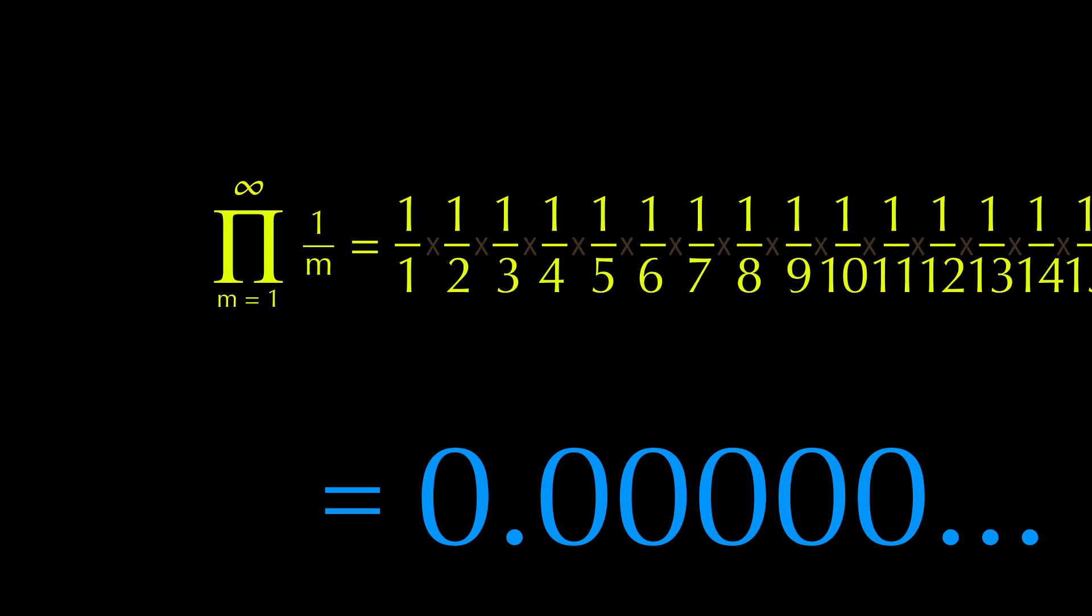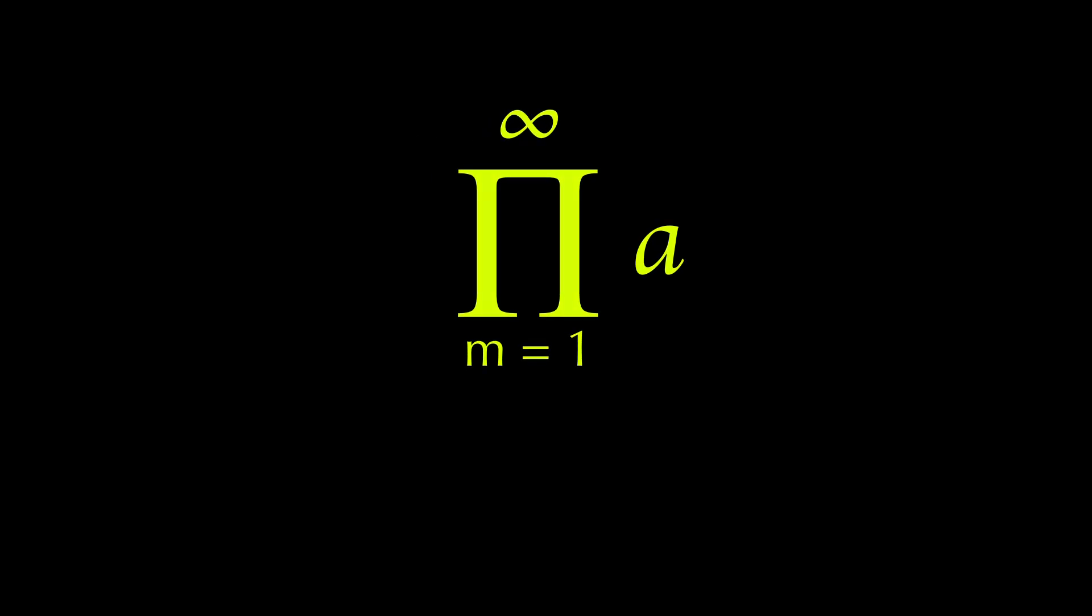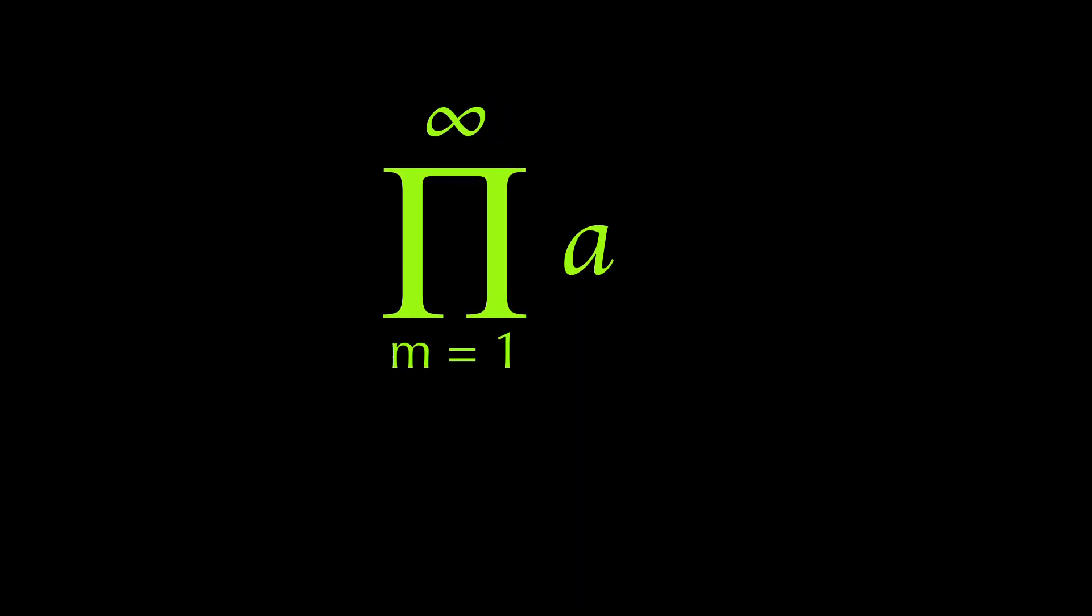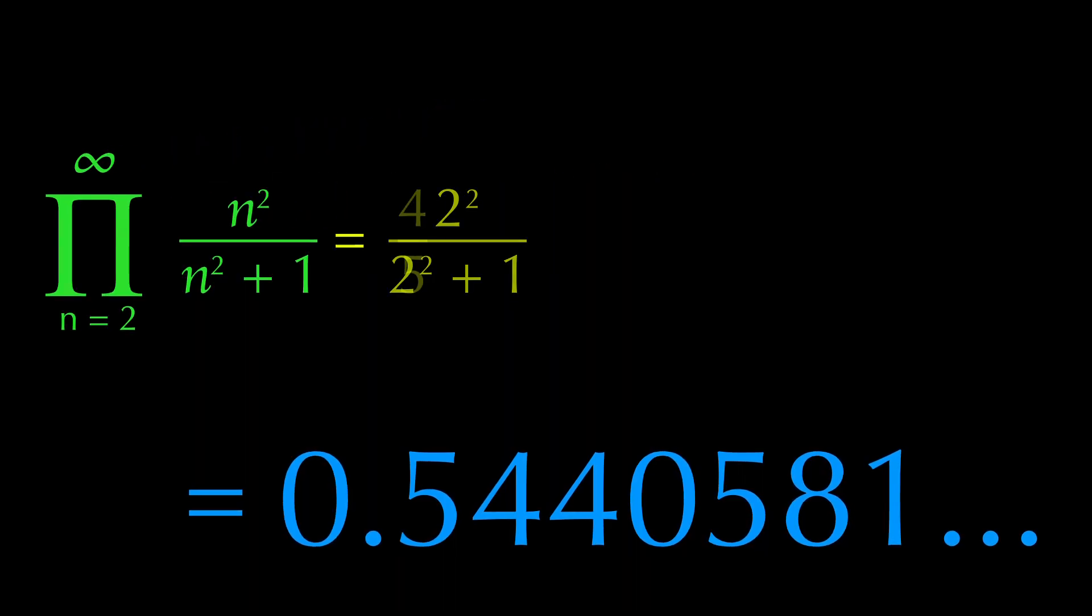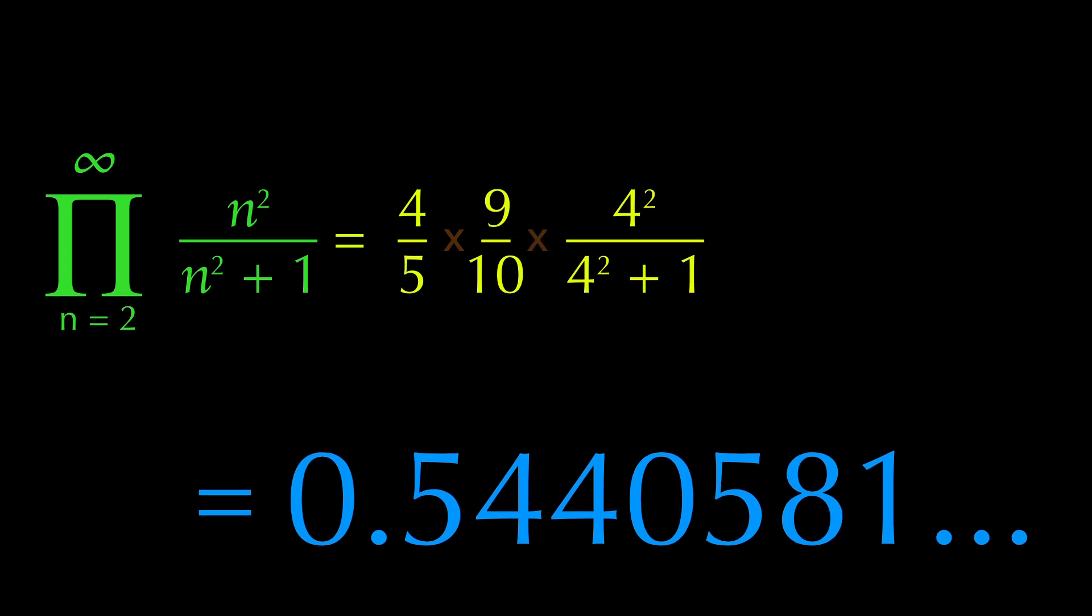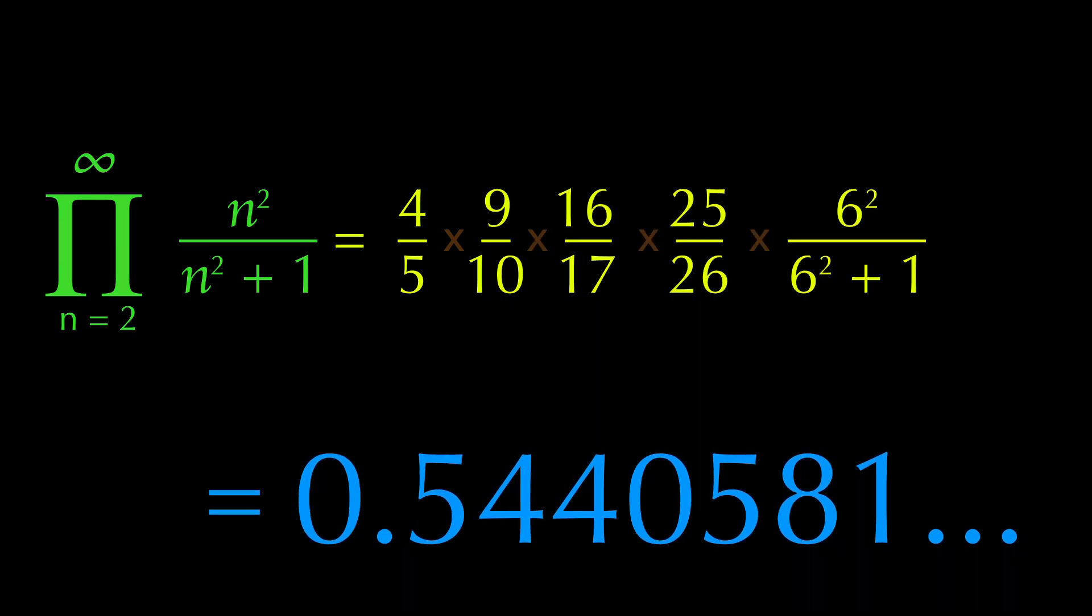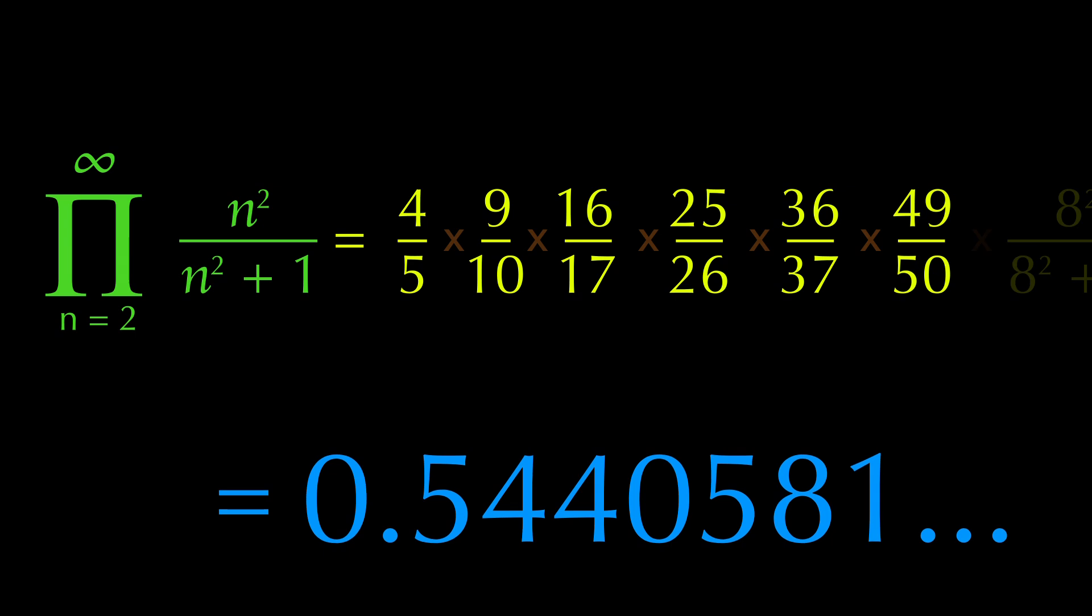But the really interesting situation occurs when we have infinite terms that converge into some specific number, like so. In this case, it's this irrational here. Just think about it for a moment. Multiplying together an infinity of certain numbers will give you some regular finite outcome, which I personally think is really cool.